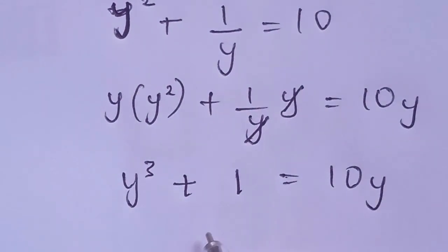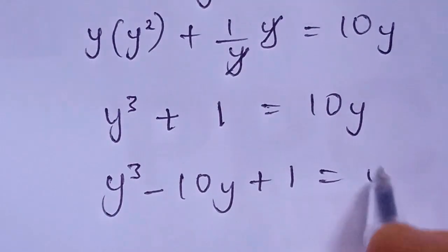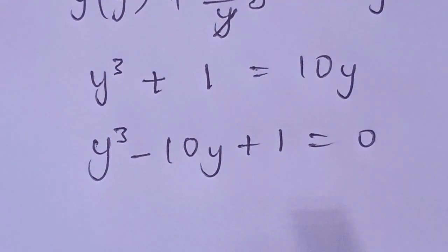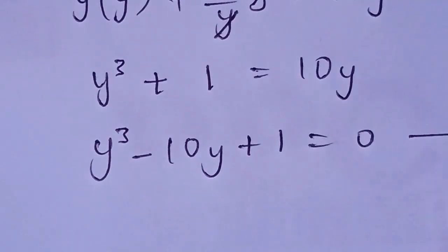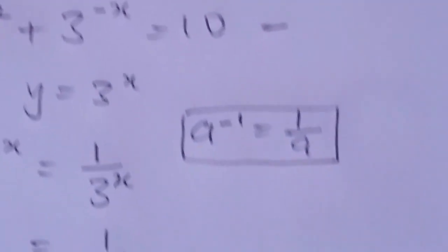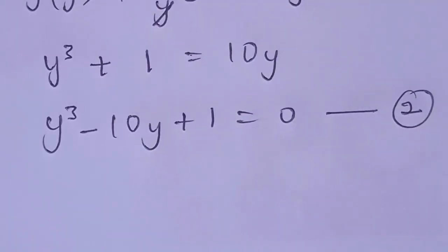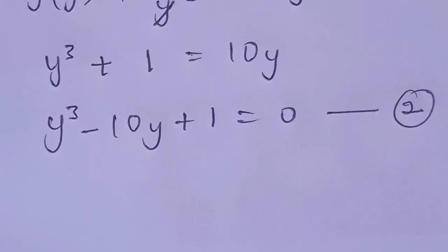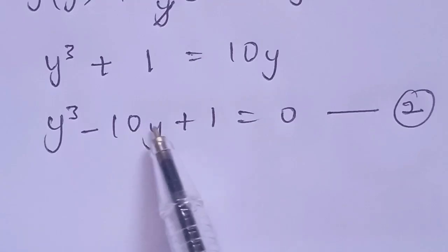We move 10y to the left-hand side. Then we have y to the power of 3 minus 10y plus 1 equal to 0. Let's call this equation 2. What we need to do in equation 2 is find the possible real values of y that will satisfy y cubed minus 10y plus 1 equals 0.